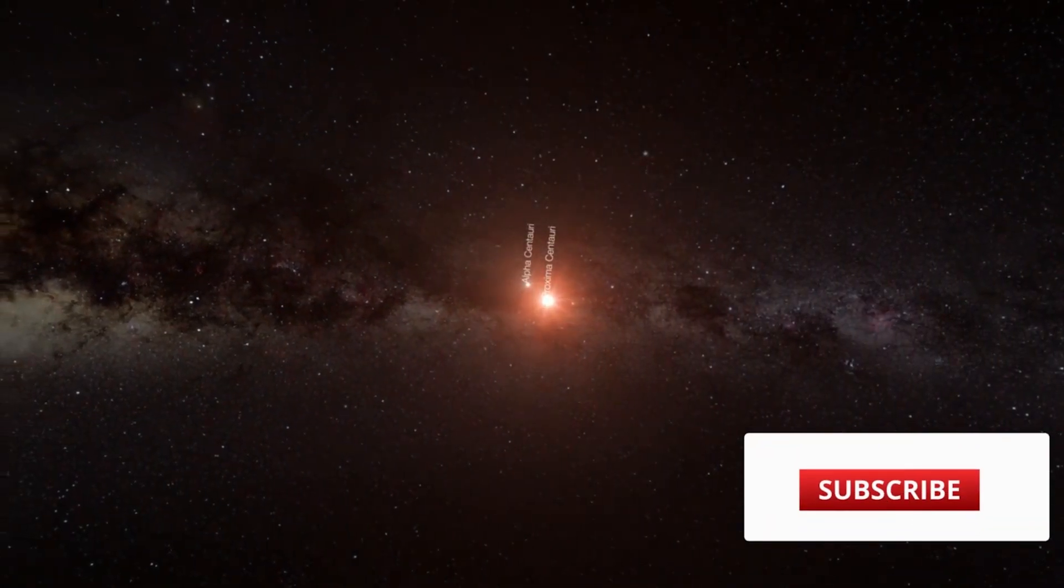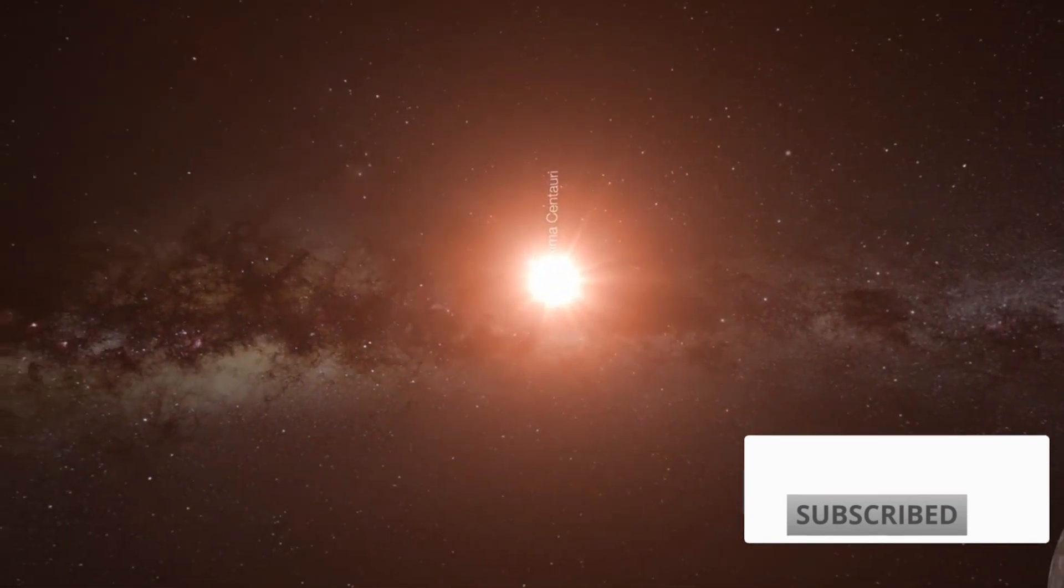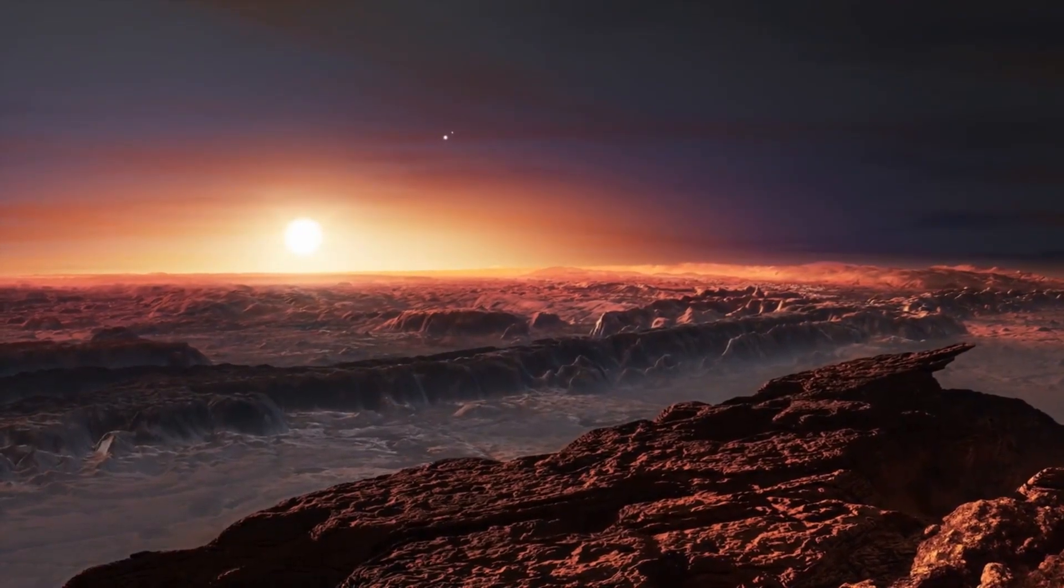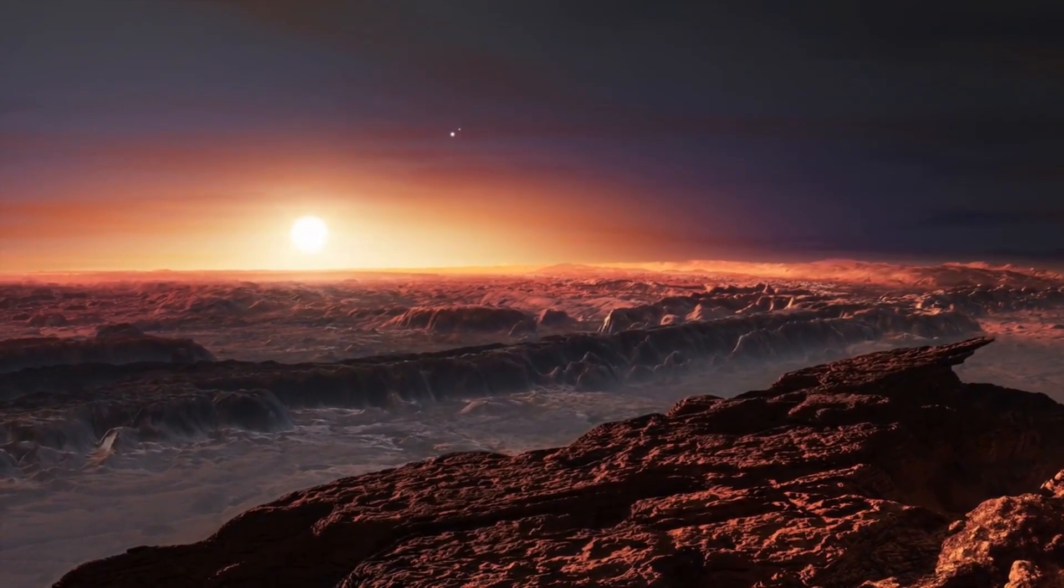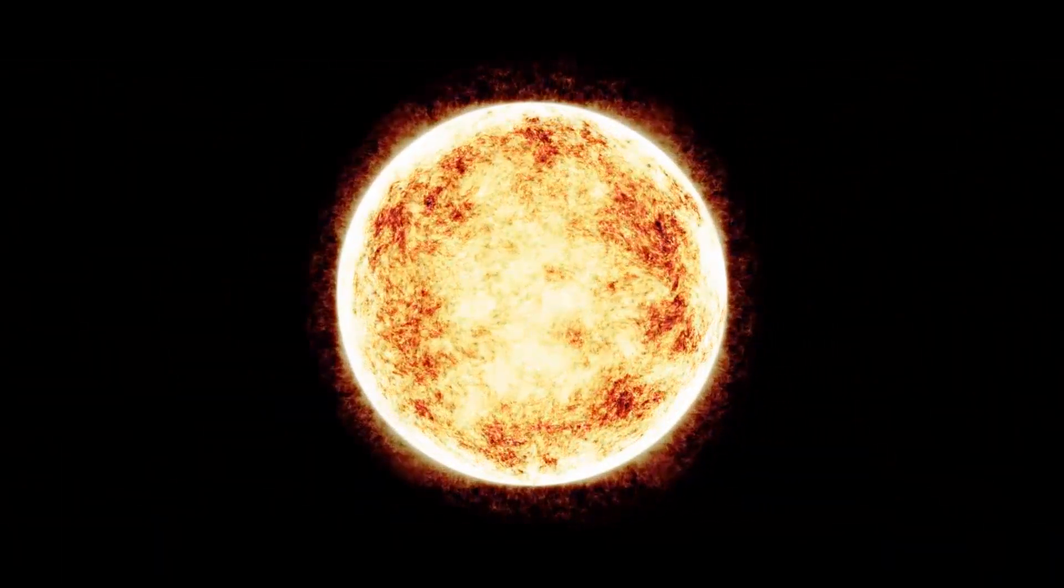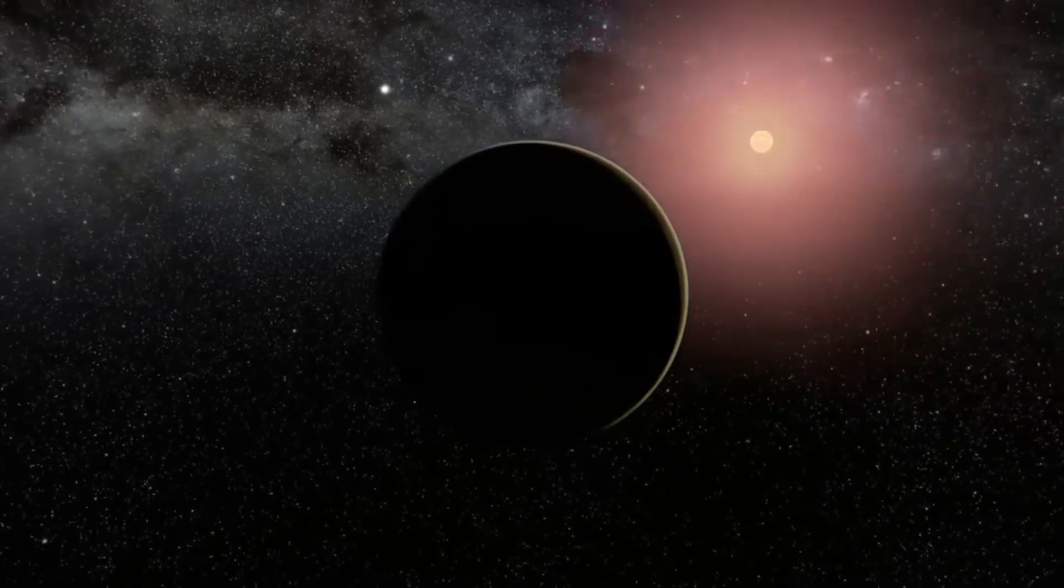As mentioned above, the star orbiting this exoplanet is Proxima Centauri, a very cold red dwarf with a surface temperature of 2872 degrees celsius, 8 times less massive than the Sun and 500 times less bright. About 7 million kilometers from its star is Proxima b, which has characteristics very similar to those of the Earth.